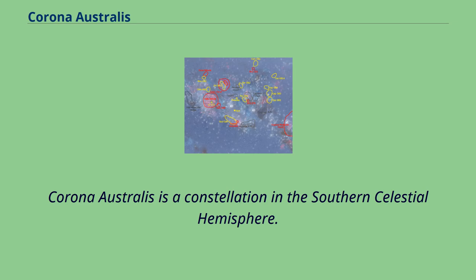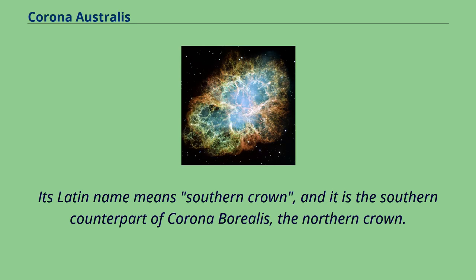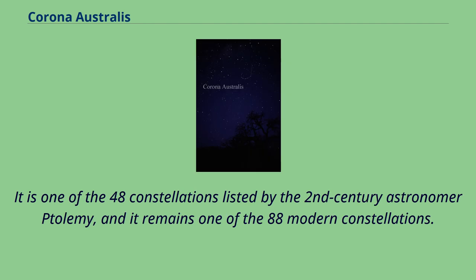Corona Australis is a constellation in the Southern Celestial Hemisphere. Its Latin name means Southern Crown, and it is the southern counterpart of Corona Borealis, the Northern Crown. It is one of the 48 constellations listed by the 2nd century astronomer Ptolemy, and it remains one of the 88 modern constellations.